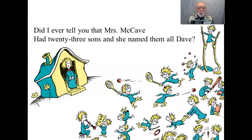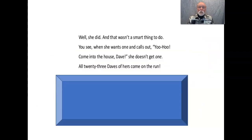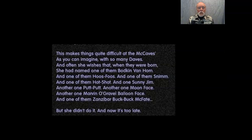The Dr. Seuss story of Mrs. McCabe and her 23 sons. Did I ever tell you that Mrs. McCabe had 23 sons, and she named them all Dave? Well, she did, and that wasn't a smart thing to do. You see, when she wants one and calls out, 'Yoo-hoo! Come into the house, Dave!' she doesn't get one. All 23 sons of hers come on the run. That makes things quite difficult at the McCabe's, as you can imagine, with so many Daves.